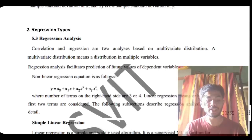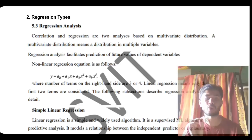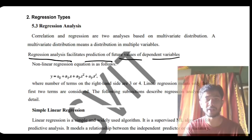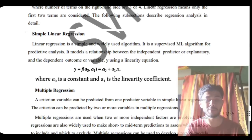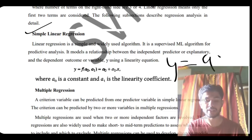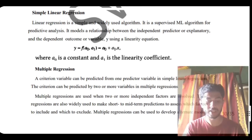The next super important question is about the different types of regression. Regression means the analysis of different variables to see whether they are increasing or decreasing — it is closely related to correlation but uses a different formula. Regression analysis facilitates prediction of future values based on dependent values. For simple linear regression, it is dependent on just one variable, of the form y = bx + c. It is a simple, widely used supervised ML algorithm for predictive analysis.